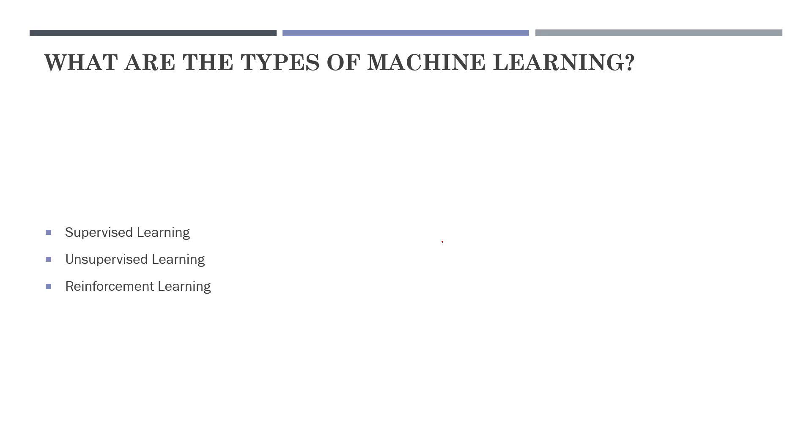Examples of unsupervised learning are K-means clustering, hierarchical clustering, and PCA. So what's reinforcement learning? Reinforcement learning is the training of machine learning models to make a sequence of decisions. The agent learns to achieve a goal in an uncertain and potentially very complex environment. Reinforcement learning is one of the most complex machine learning algorithms.